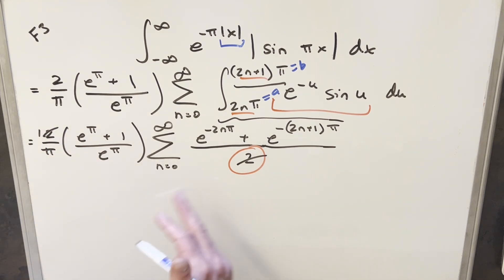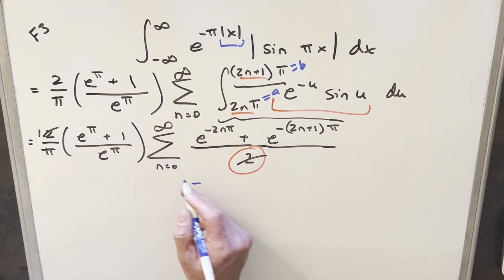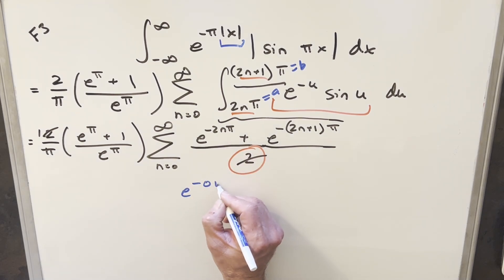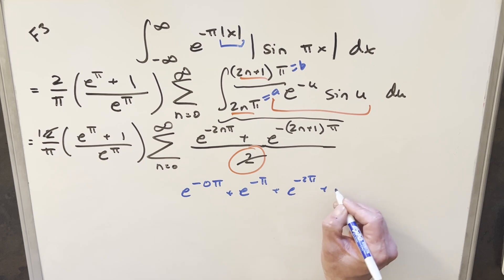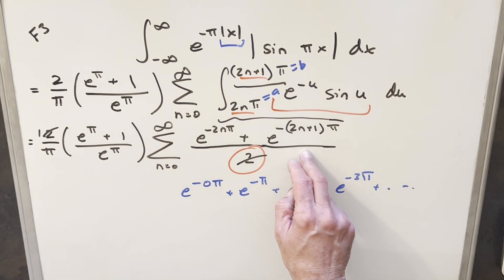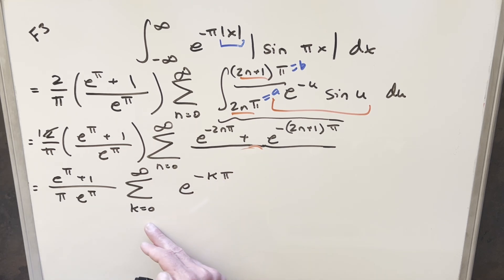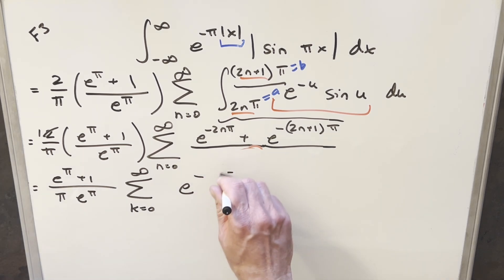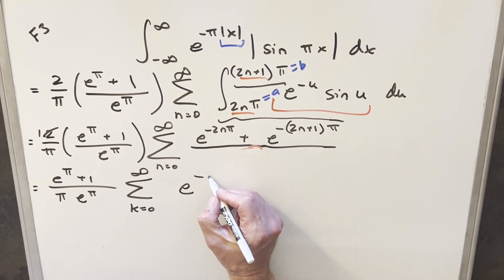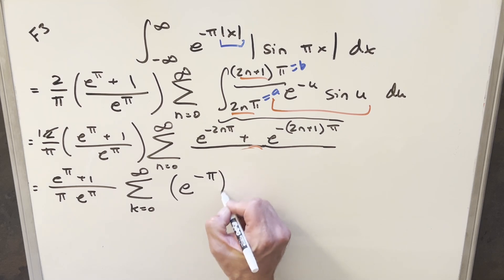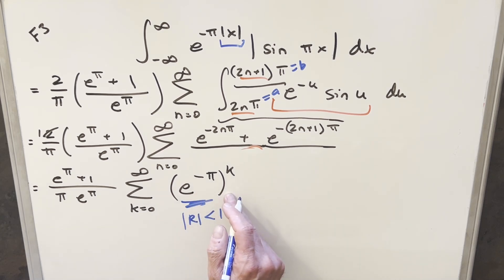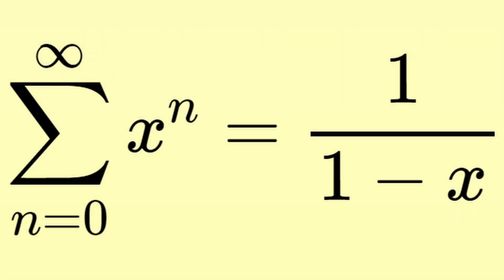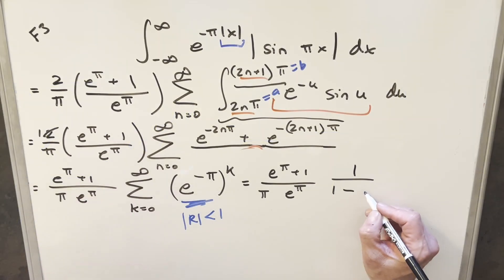Substituting back a = 2nπ and b = (2n+1)π into the summation, the 1/2 from the denominator can be brought outside as a factor of 1/2, which cancels with the 2 already out front, leaving just 1. Now we just need to simplify the summation of e^(−2nπ) + e^(−(2n+1)π). Writing out the terms: when n=0 we get e^0 + e^(−π), when n=1 we get e^(−2π) + e^(−3π), and so on. Re-indexing with variable k starting from 0, this is the sum of e^(−kπ) from k=0 to ∞, which equals (e^(−π))^k — a geometric series with ratio e^(−π).